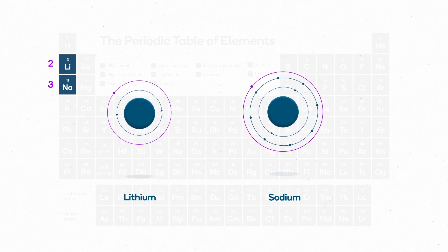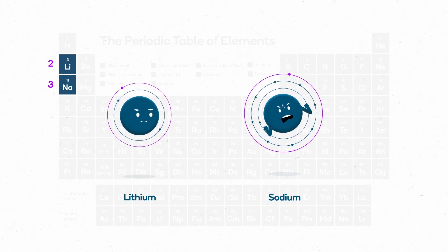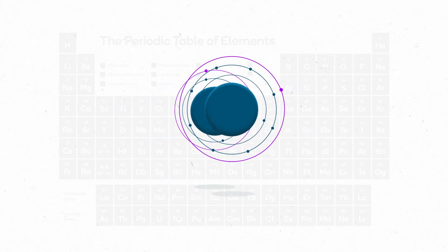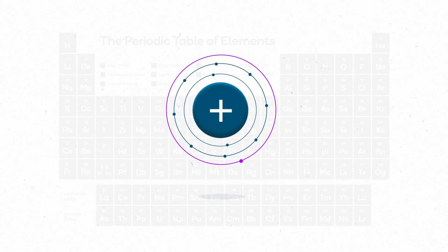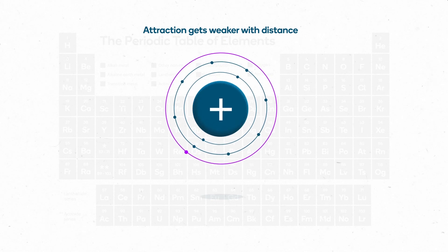This explains why sodium is more reactive than lithium. Electrons orbit the nucleus because they're attracted to its positive charge, and this attraction gets weaker with distance.